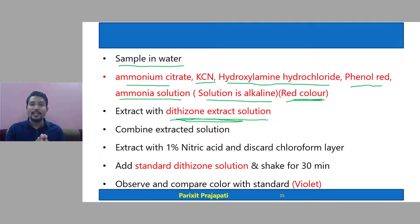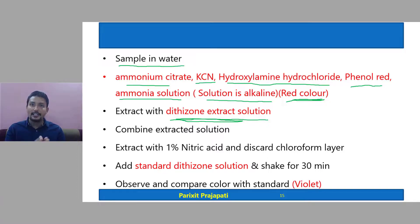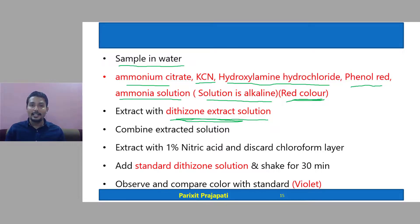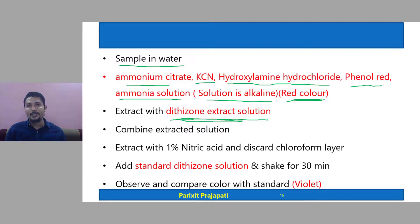The aqueous nitric acid phase is further treated with standard dithizone solution, which also contains chloroform, and is shaken for 30 minutes. After shaking, violet color is produced in the chloroform layer due to the formation of the lead dithizonate complex. This violet color intensity is then compared.